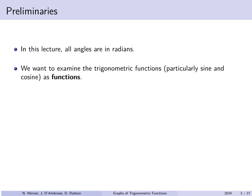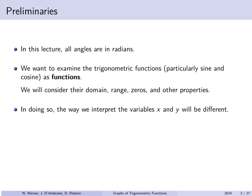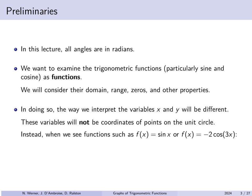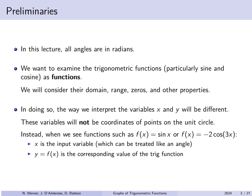We want to look at trigonometric functions, particularly sine and cosine, as functions. So we're going to be looking at their domain, what can you plug in; the range, what values do you get out; the zeros or roots — what values would you plug in to get out a zero — and other properties. We're not specifically going to be using x and y as coordinates of points on the unit circle. Rather, when we say something like f(x) = sin(x) or f(x) = -2cos(3x), x is the input variable — the angle measured in radians — whereas y or f(x) is the corresponding value of the function.